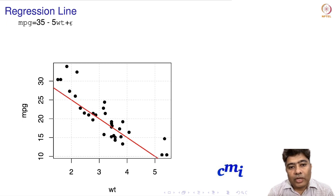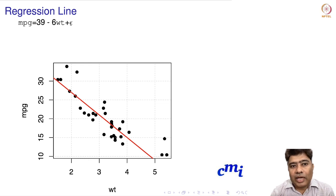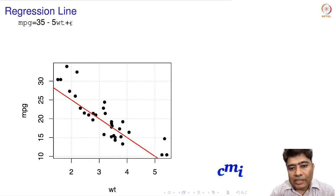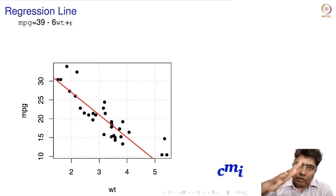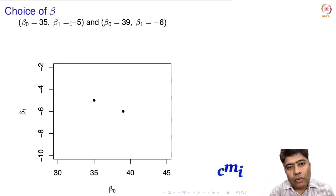There are only two values I'm considering for beta naught and beta 1: 35 and minus 5, and 39 and minus 6. You can see the model is changing accordingly.